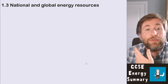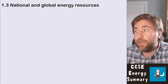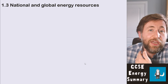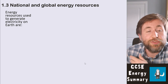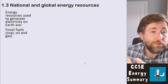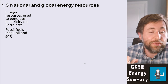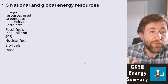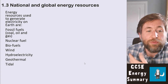Part 1.3 of energy goes on to talk about national and global energy resources and how we use them and why we make the choices that we make. The energy resources we use to generate electricity on earth are fossil fuels — coal, oil and gas — that's the most traditional way we still use a lot of that, plus nuclear fuels, biofuels, wind, hydroelectricity, and geothermal.